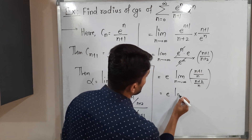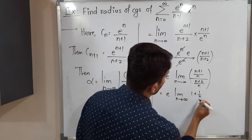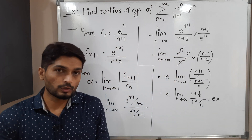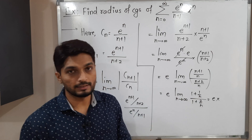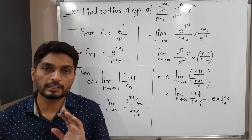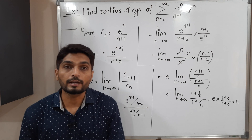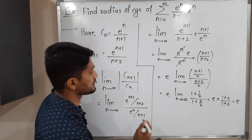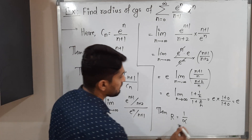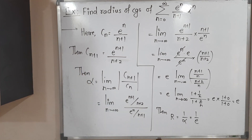So this equals e times the limit as n tends to infinity of (1 + 1/n) / (1 + 2/n). Applying the limit as n tends to infinity: 1/n → 0 and 2/n → 0. So we get e times (1+0)/(1+0) = e times 1 = e. So alpha = e, and therefore the radius of convergence R = 1/e. That is our required answer.